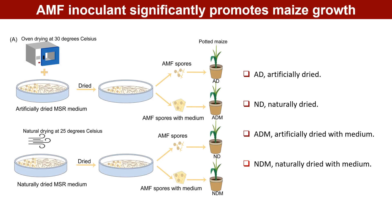We used both natural air-drying and artificial air-drying for the preparation of arbuscular mycorrhizal fungi spores in an in vitro dual culture system. We systematically evaluated the effects of Rhizophagus irregularis spores prepared by these two air-drying methods on maize growth traits after co-inoculation with MSR medium in maize plants.